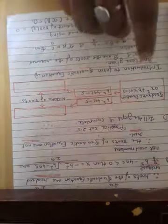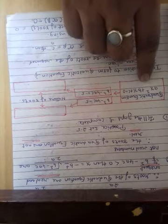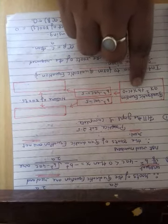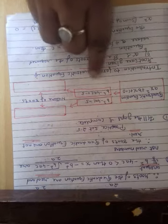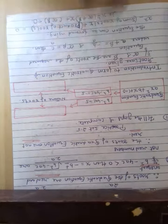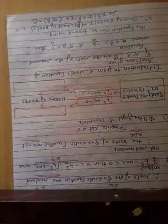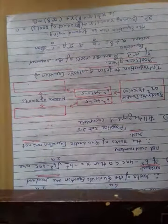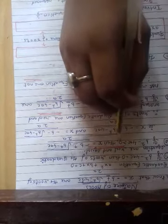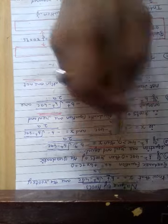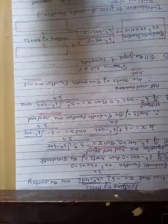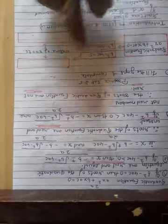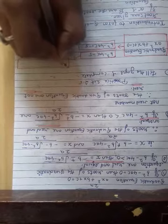Quadratic equation का standard form ax² + bx + c = 0 दिया है। हमारा question है कि b² - 4ac = 5 दिया हुआ है। हम लोगों को second condition देखनी पड़ेगी: b² - 4ac greater than 0 है — हाँ, 5 greater than 0 है — तो roots are real and unequal.